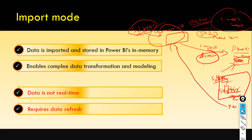Direct query mode doesn't require a data refresh. Whenever the user wants to see north and south region, it goes and asks the SQL Server: show me the north and south region sales from the sales table. It checks and sends back up-to-date information to your report. Real-time access is not possible in import mode because you need to refresh your data to keep your report file up to date.